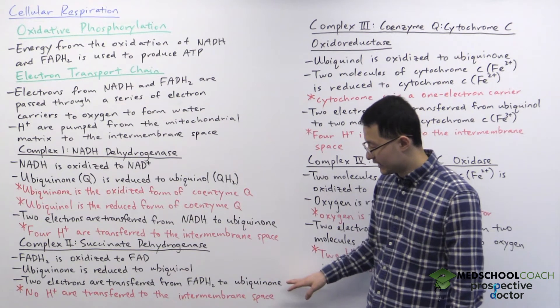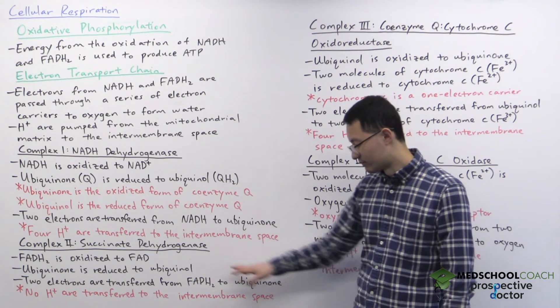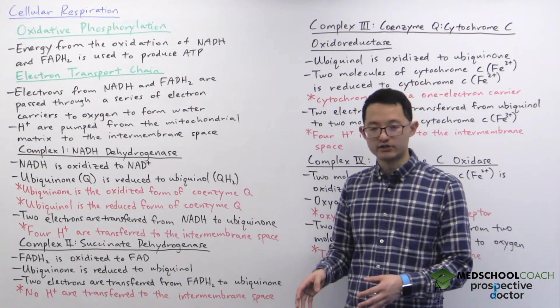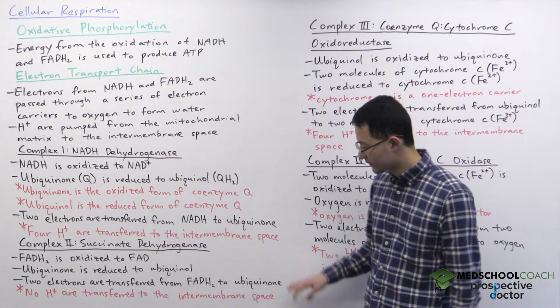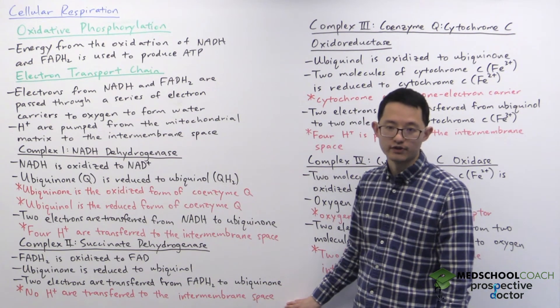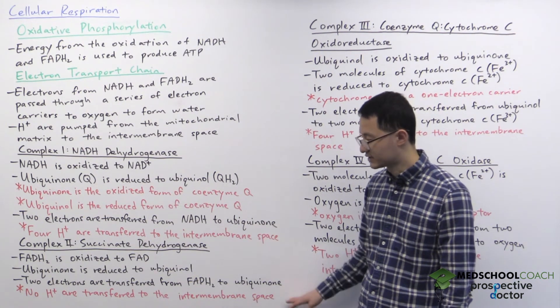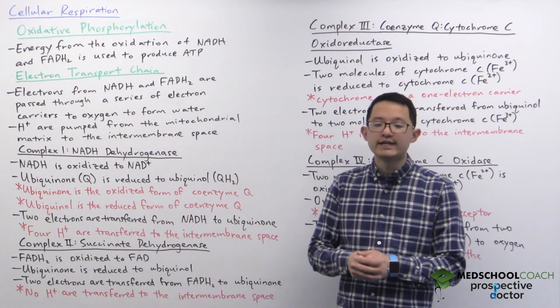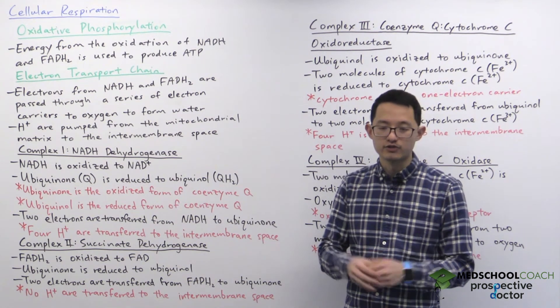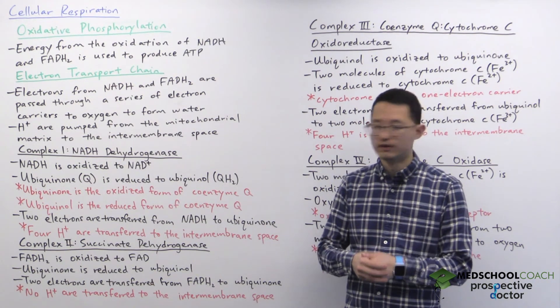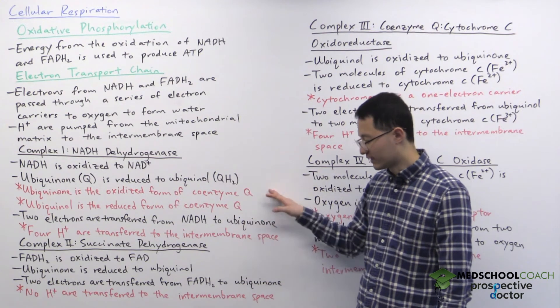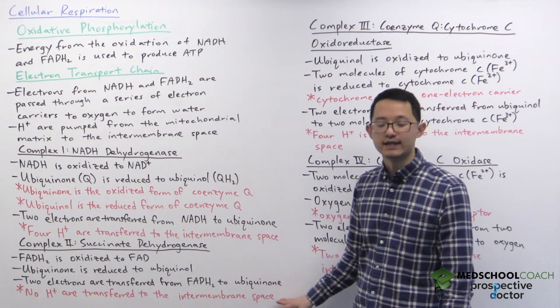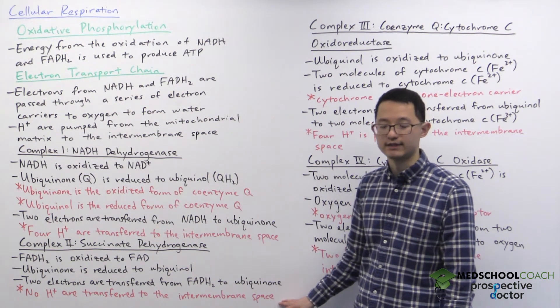Now in complex 2, two electrons are transferred from FADH2 to ubiquinone. So again, these two molecules are both two-electron carriers; they carry two electrons per molecule. And notably, no protons are transferred to the intermembrane space in complex 2. So this actually explains why you've probably heard before that NADH produces more ATP molecules per molecule than FADH2. And that's because NADH enters in complex 1 that will help pump protons across the membrane. FADH2 enters in complex 2 that does not pump any protons into the intermembrane space.